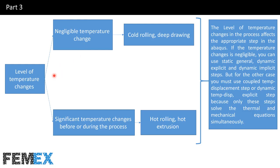The level of temperature changes in the process affects the modeling strategy in Abaqus. If the temperature change is negligible, like in cold rolling or deep drawing, you can use the static general step, dynamic implicit step, or dynamic explicit step, because these steps do not account for temperature changes during the forming process.